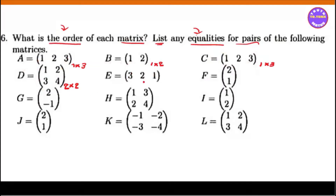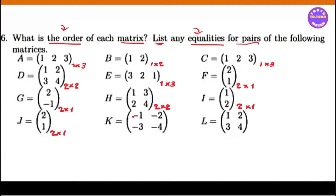Then row one, column three is one by three matrix. Then row two, column one is two by one matrix. Then row two, column one is two by one matrix. H series is two by two matrix. Row two, column one is two by one matrix. Then all the matrices are two by one matrix. Then row two, column one is two by one matrix.